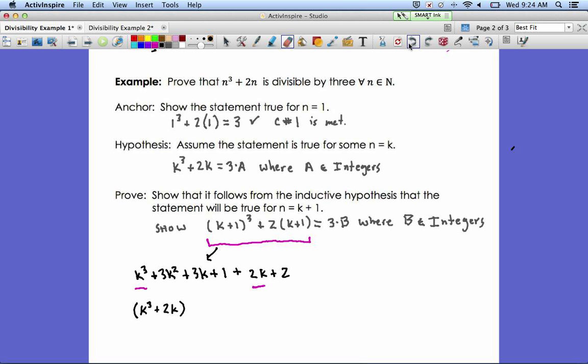So there's k cubed plus 2k. And what we're left with is a 3k squared, a 3k, a 1, and a 2. And if you put all that together, you get 3k squared plus 3k plus 3.